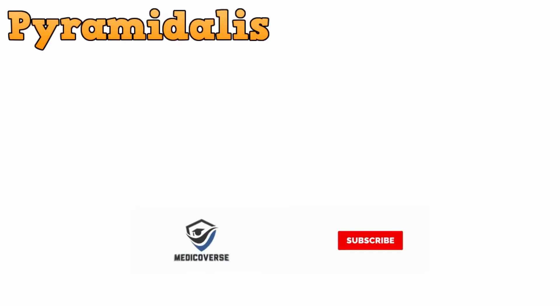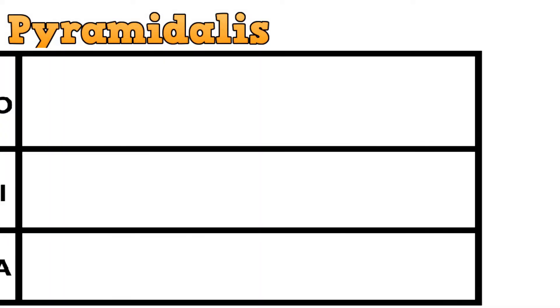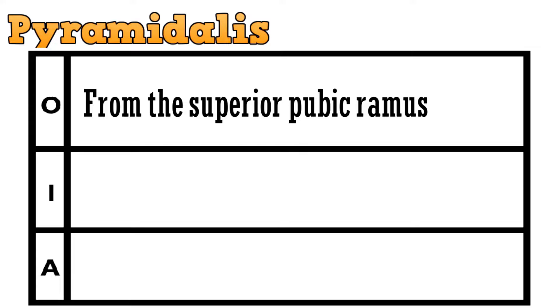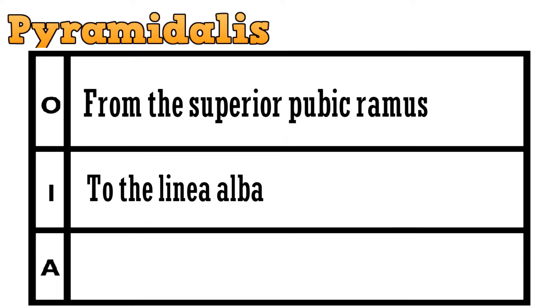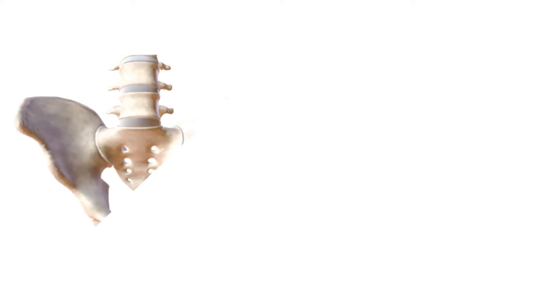Starting with the first muscle, Pyramidalis. This muscle originates from the superior pubic ramus and gets inserted to the linea alba. The muscle tenses the linea alba. Let's have a look.